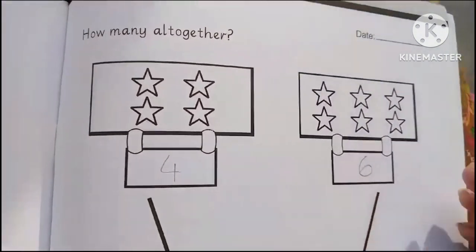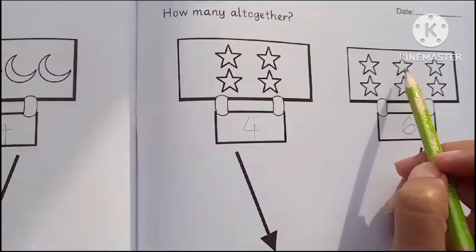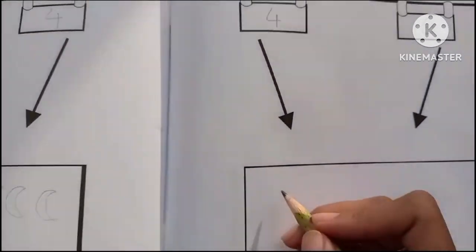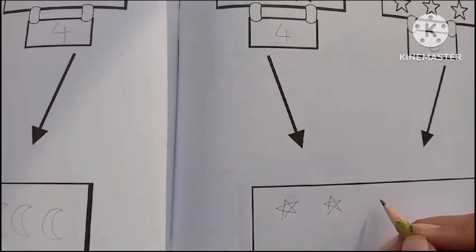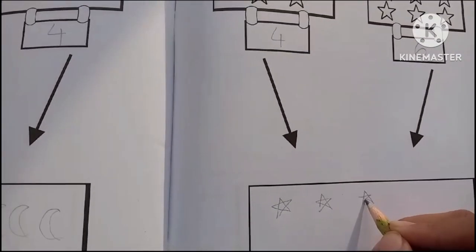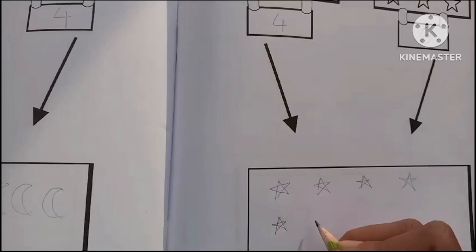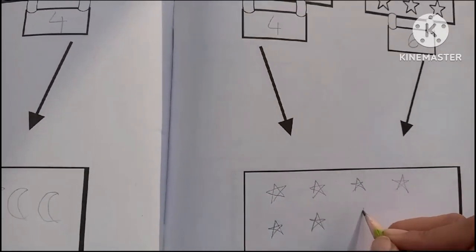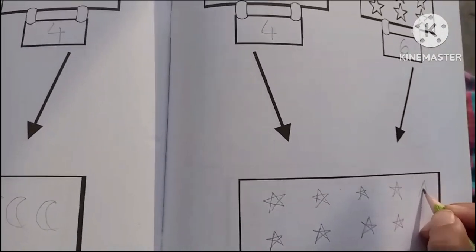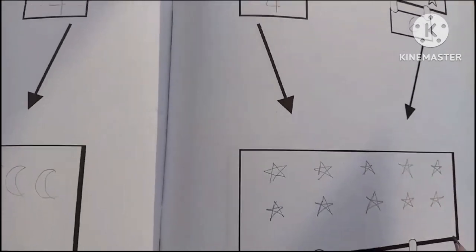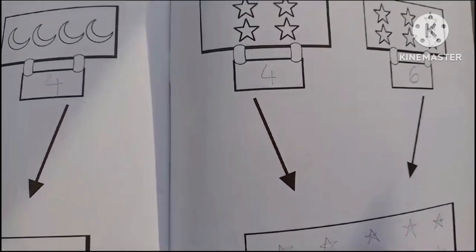How many altogether? One, two, three, four, five, six, seven, eight, nine, ten. Let's draw ten stars. One, two, three, four, five, six, seven, eight, nine, and ten. Let's write ten. There are ten stars.